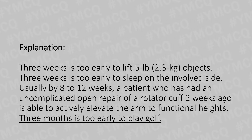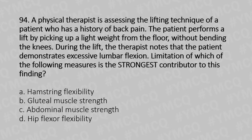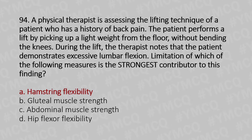Now let's move to our 94th question. A physical therapist is assessing the lifting technique of a patient who has a history of back pain. The patient performs a lift by picking up a light weight from the floor without bending the knees. During the lift, the therapist notes that the patient demonstrates excessive lumbar flexion. Limitation of which of the following measures is a stronger contributor to this finding? Option A: Hamstring flexibility. Option B: Gluteal muscle strength. Option C: Abdominal muscle strength. Option D: Hip flexor flexibility. And the answer is Option A: Hamstring flexibility.